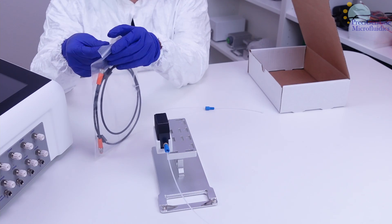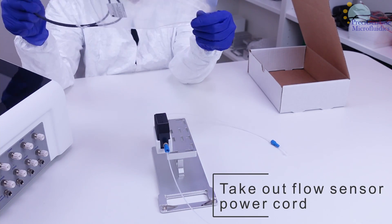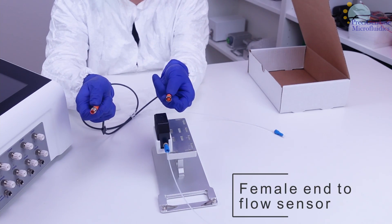Once your tubing is connected, take out the flow sensor power cord, and note its ends. The female end goes to the flow sensor, and the male to the pressure controller.